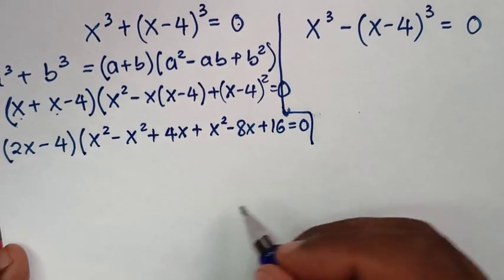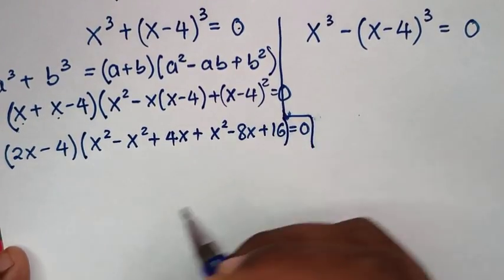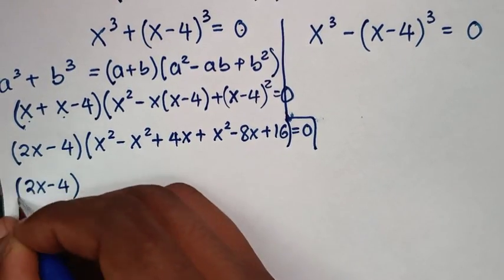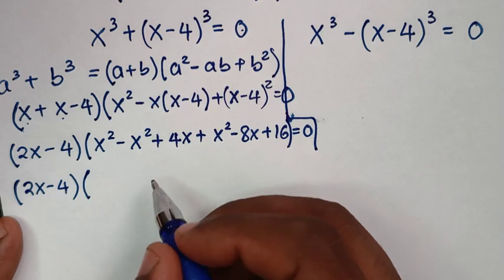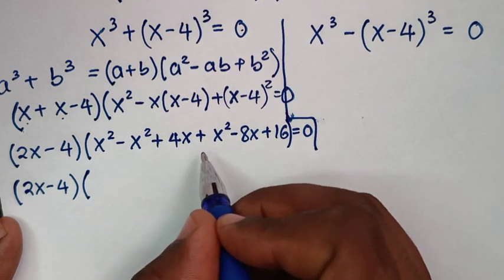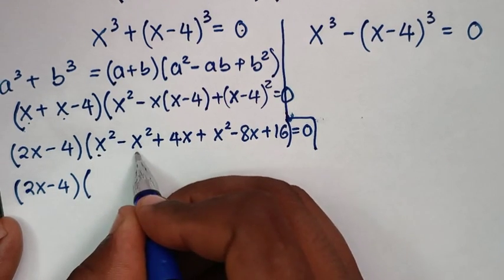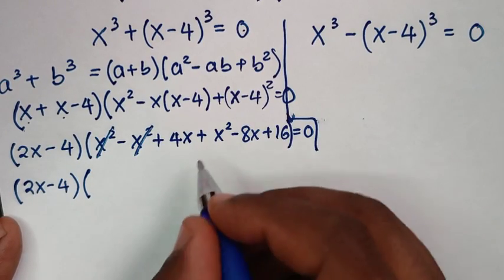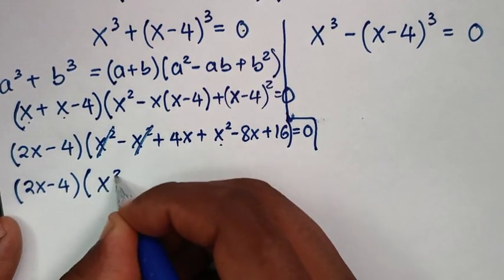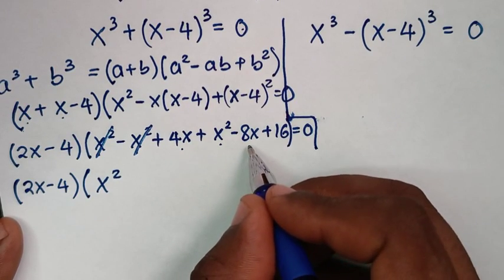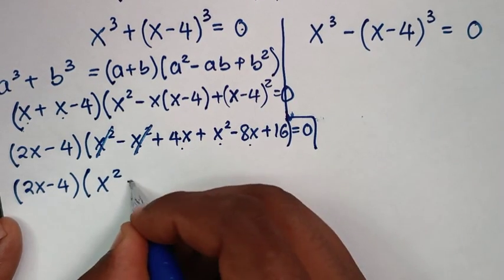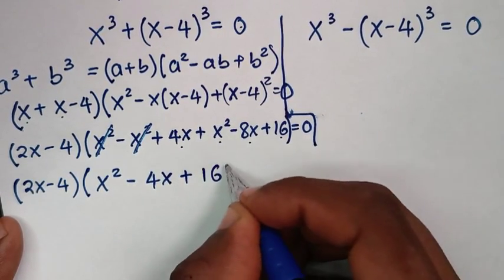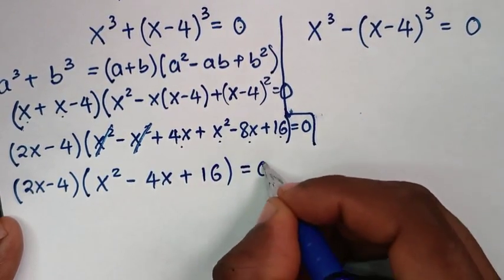In the next step, it will be (2x minus 4), bracket. Inside, x squared minus x squared cancels to 0. So we are left with x squared, then 4x minus 8x is minus 4x, then plus 16, bracket, is equal to 0.